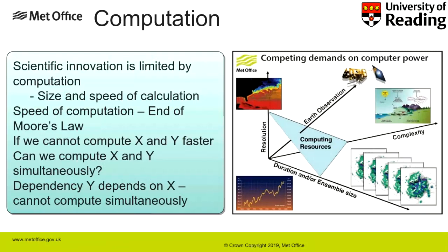Scientific innovation is limited by computation — both the size and speed of the calculation. We've essentially reached the end of Moore's law in terms of speed, so if we cannot compute x and y faster, can we compute x and y at the same time, simultaneously or concurrently? This is parallelism — doing multiple things at once. But we have to think about dependencies in the code: if y depends on x, we cannot compute them both at the same time. This is why parallel programming is much harder.